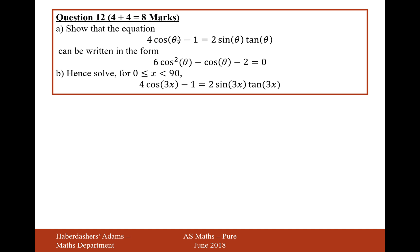Show that the equation 4 cos θ minus 1 equals 2 sin θ tan θ can be written in the form 6 cos² θ minus cos θ minus 2 equals 0.